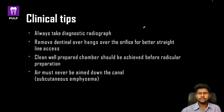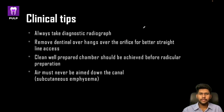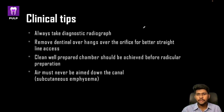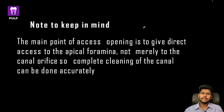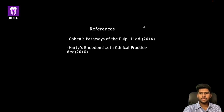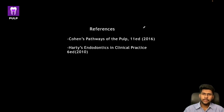Some clinical tips: always have a diagnostic radiograph; remove dentinal overhangs over the orifice for better straight line access; have a well-prepared chamber before radicular preparation; never aim irrigation air down the canal, which can lead to subcutaneous emphysema; always use negative pressure or paper points for drying and cleaning the canal. The main point of access opening is to give direct access to the apical foramen, not merely to the canal orifice, so complete canal cleaning can be done accurately. If you want more detail on endodontics, mention it in the comments.